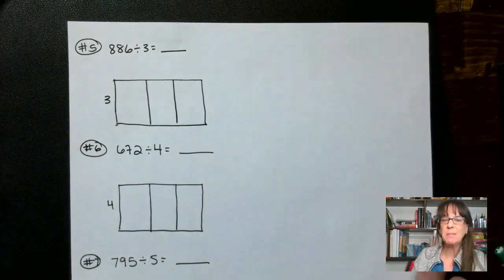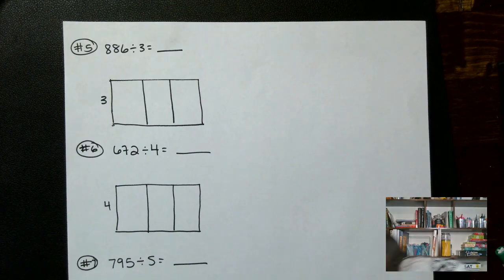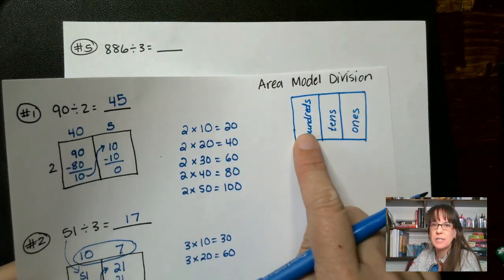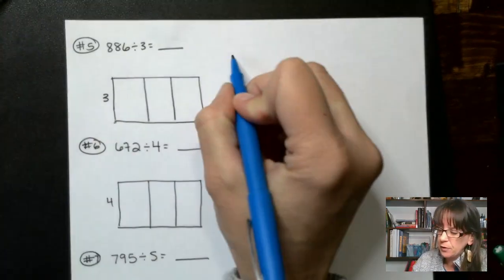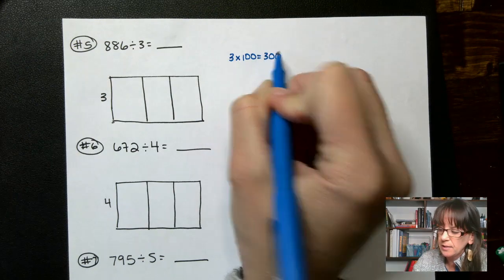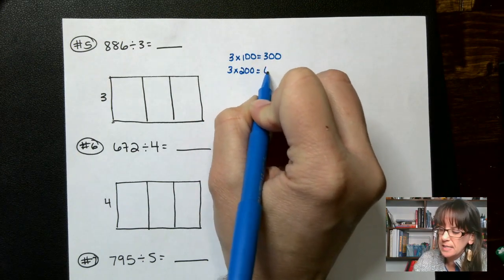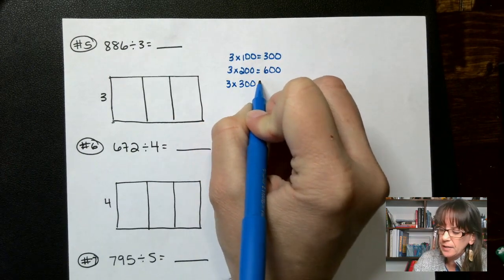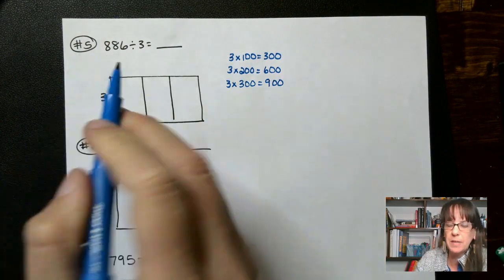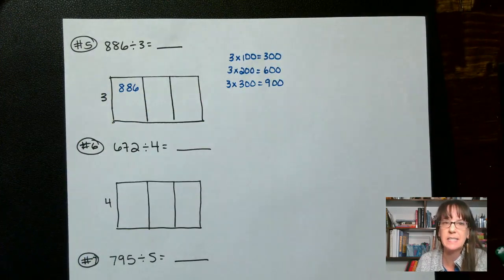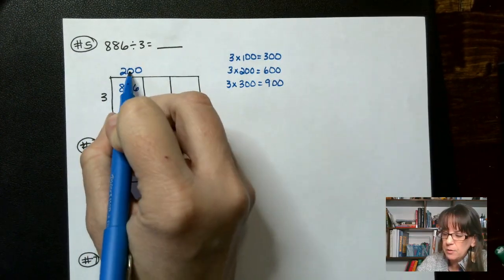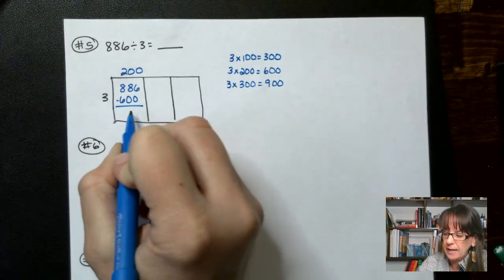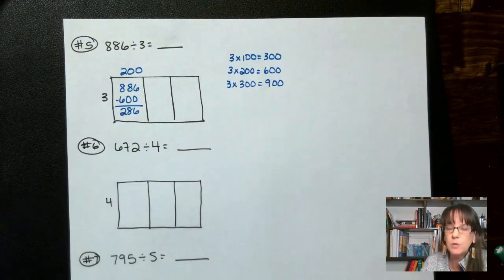Now we're getting into something a little more difficult. We've got 1s, 10s, and now hundreds over here — this is our hundreds column. For 886 divided by 3: 3 times 100 is 300, 3 times 200 is 600, 3 times 300 is 900 — and we're already over because we're trying to get to 886. So I can only do 200. 200 times 3 gives me 600. Subtract that, we get 286.